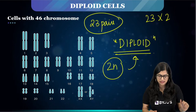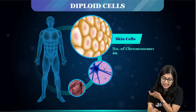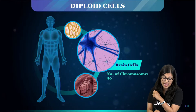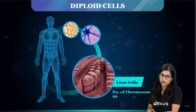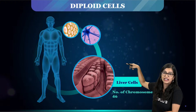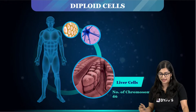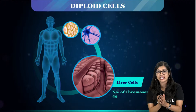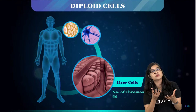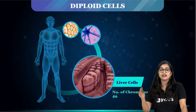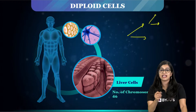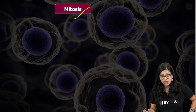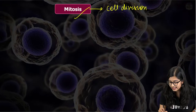Some examples of diploid cells: your skin cells have 46 chromosomes, your neurons have 46 chromosomes, and your liver cells have 46 chromosomes. The chromosome number of 46 must be maintained within our body; otherwise cells will not function well. Who is responsible for maintaining this number as cells multiply? We have a kind of cell division responsible for this, which is mitosis.